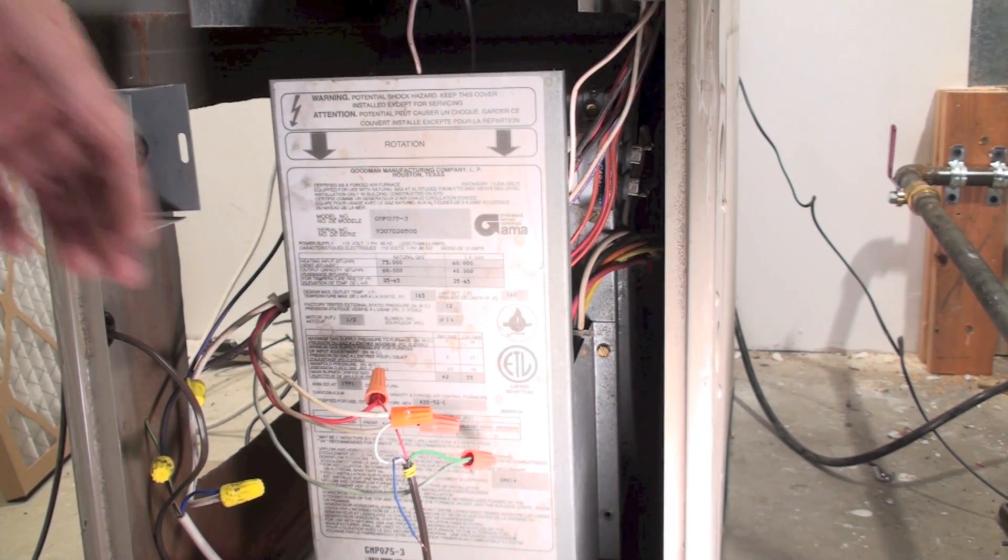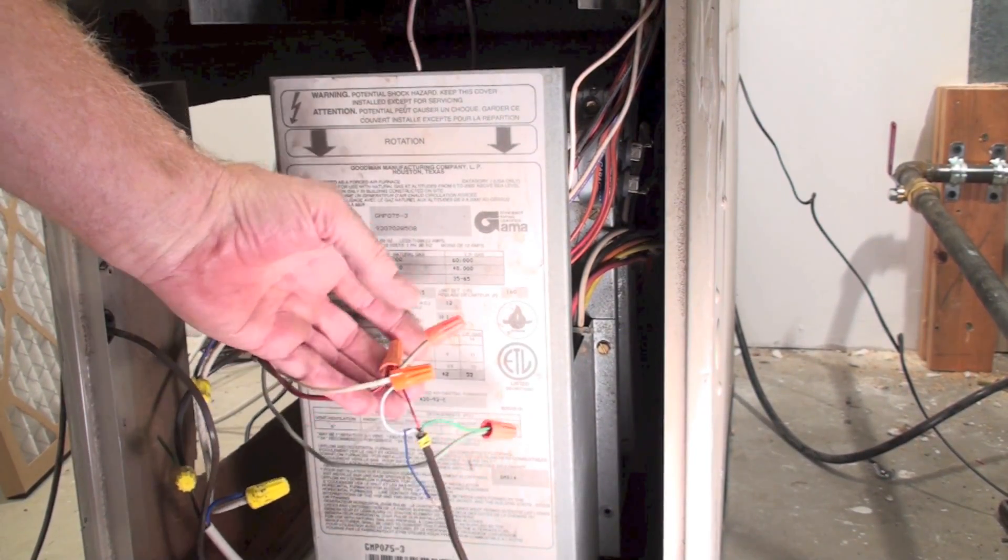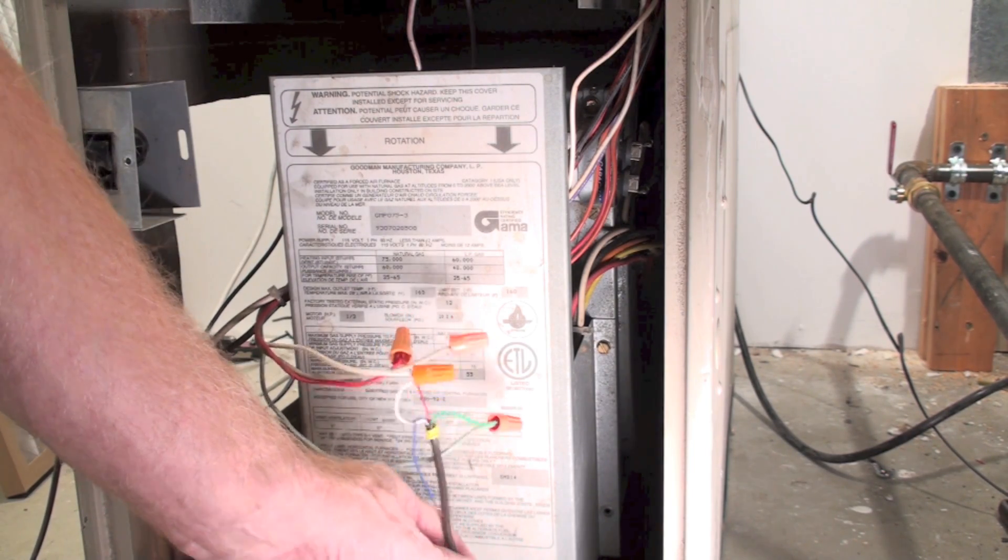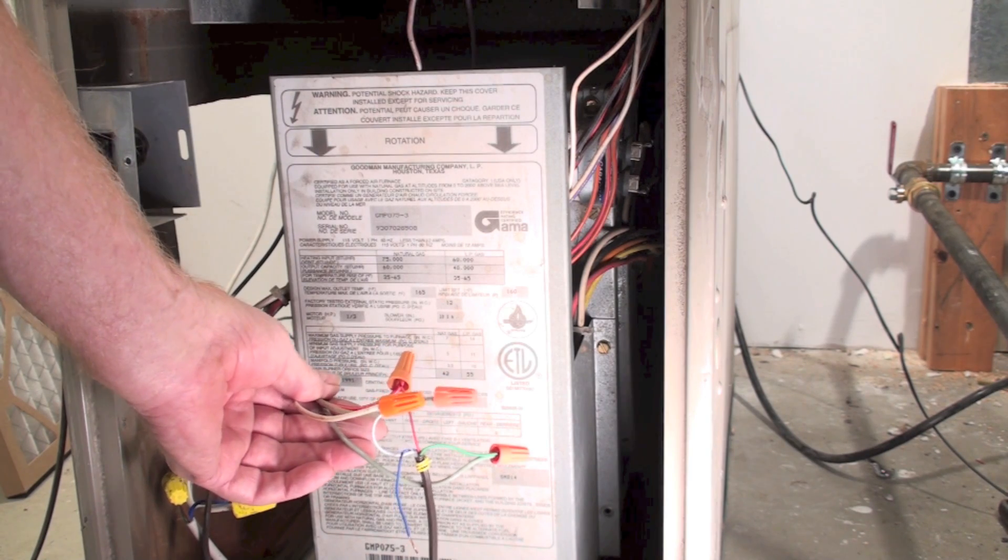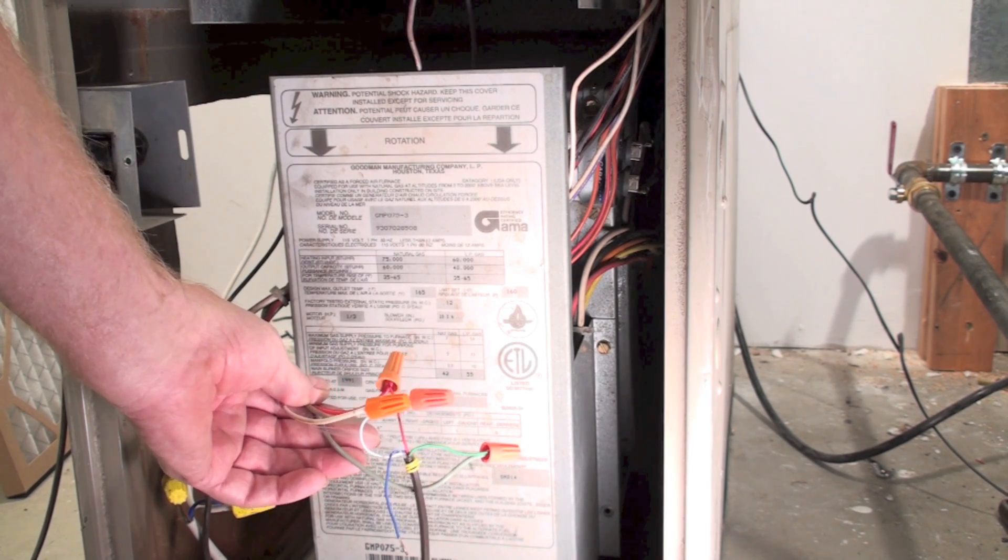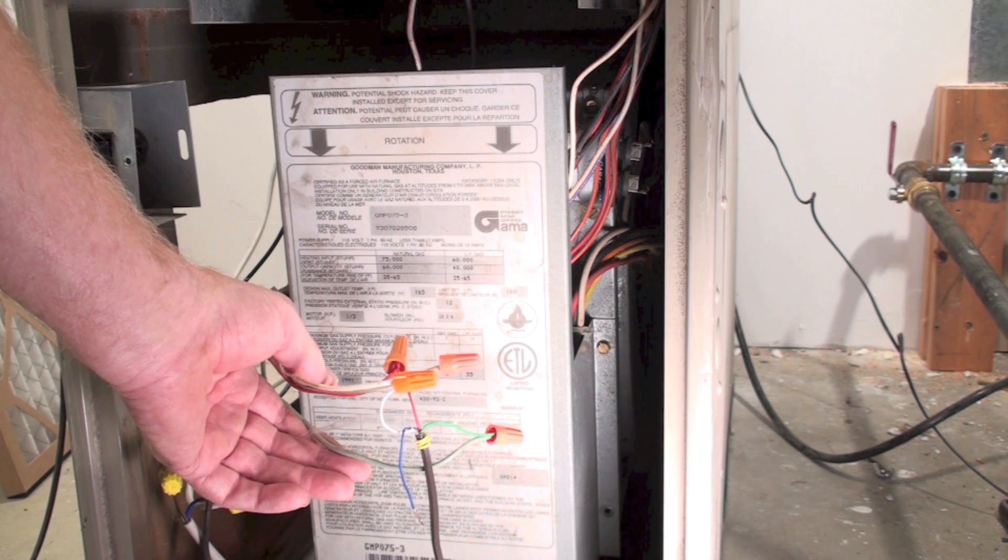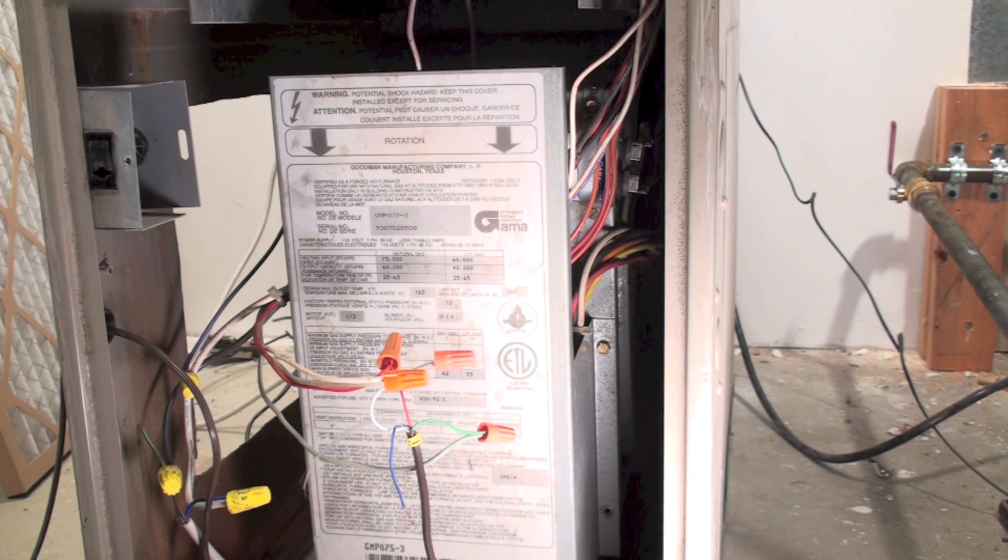Now this one simply has wire nuts, wire nutting the low voltage wires together. Here's your low voltage wire going up to the thermostat, and these are the wires coming out of the control. Now, if I want to find out where to set the anticipator on this, I have to determine the amperage draw of the control circuit.